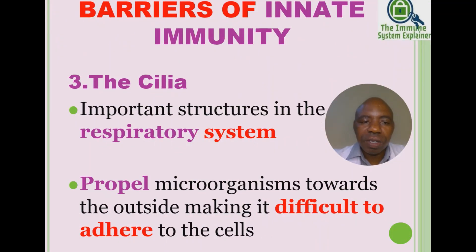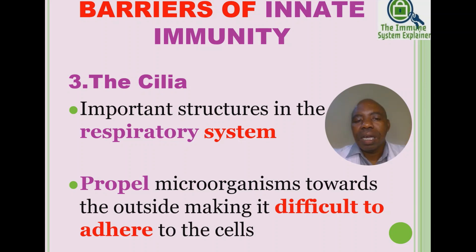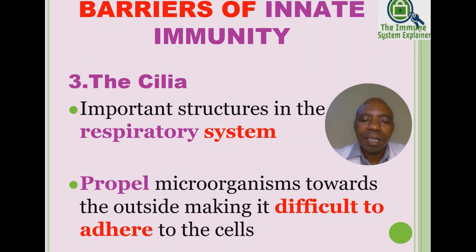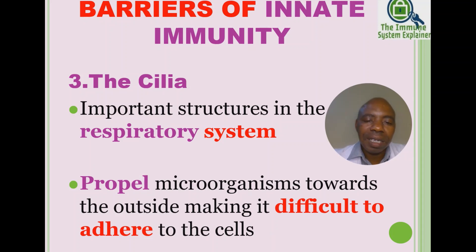The third physical barrier is cilia — one cilium, many cilia. These are important structures in the respiratory system that propel microorganisms toward the outside, making it difficult for them to adhere. Microorganisms typically adhere by interacting with epithelial cells, but once propelled outward they are expelled. Cilia are a very important component of the physical barriers of the innate immune system.